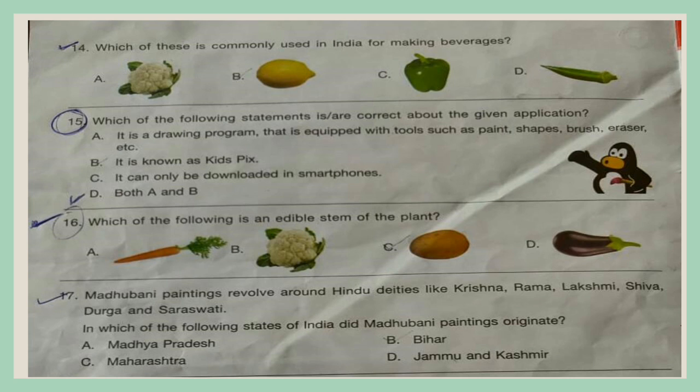Question 15. Which of the following statements is or are correct about the given application? A. It is a drawing program equipped with tools such as paints, shapes, brush, eraser, etc. B. It is known as Kids' Pix. C. It can only be downloaded on smartphones. D. Both A and B.